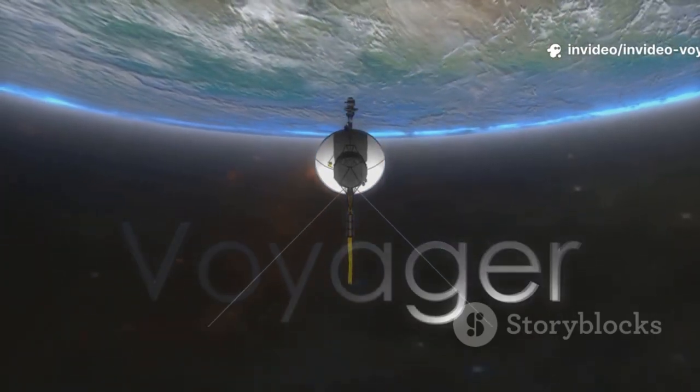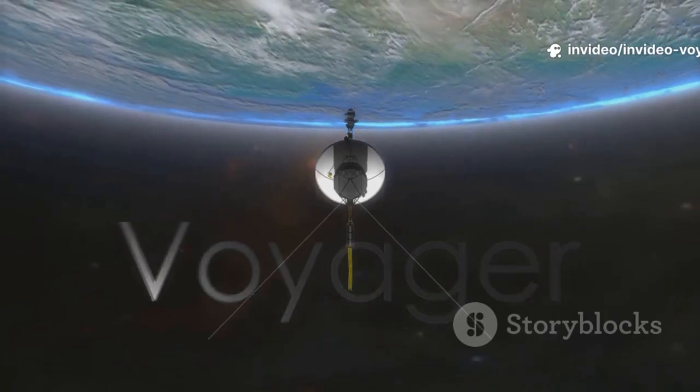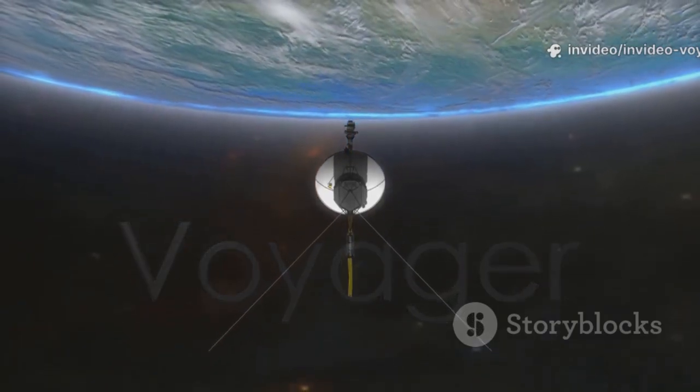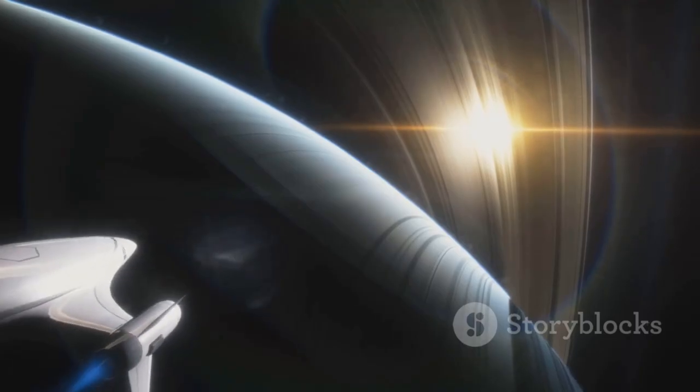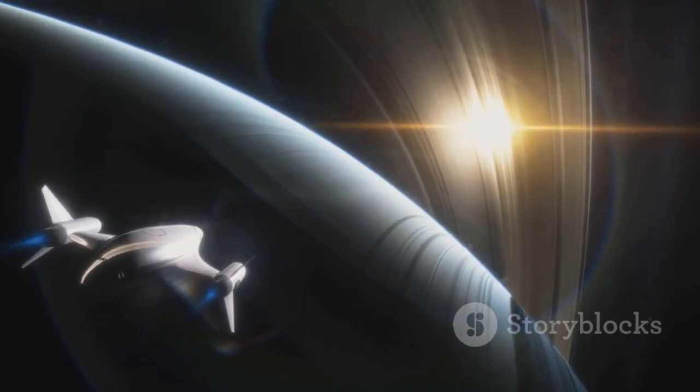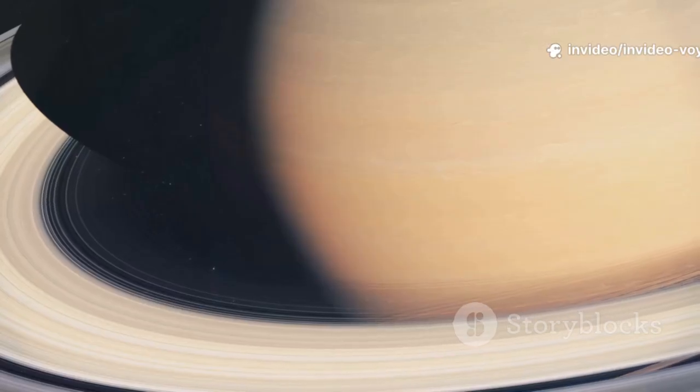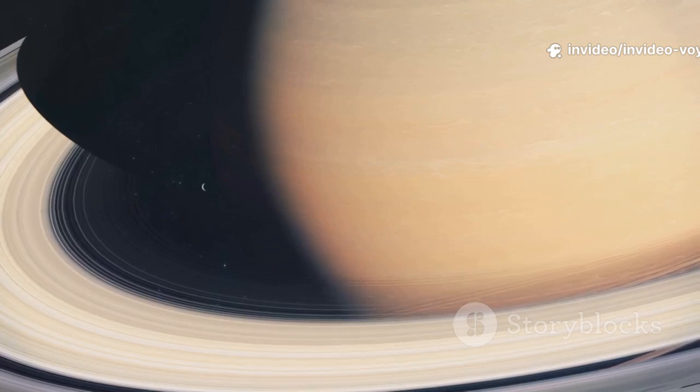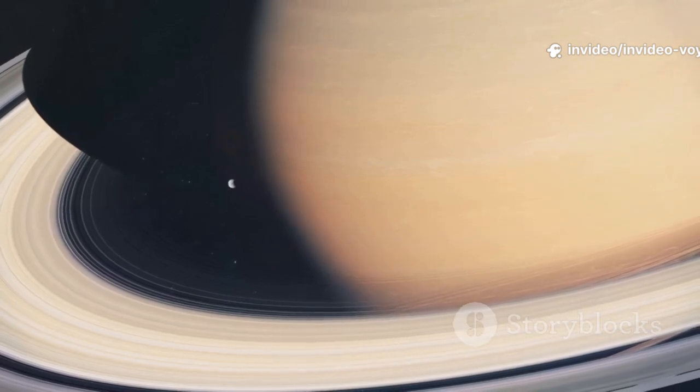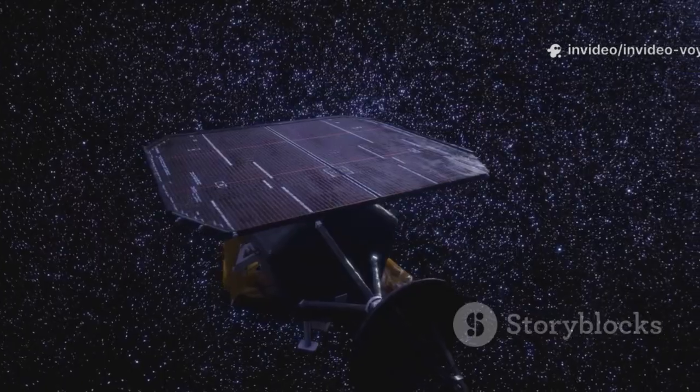After its tour of the gas giants, Voyager 1 just kept going. It flew past the orbits of Uranus and Neptune. It headed for the boundary of our solar system, the place where the sun's influence finally fades. We all watched for decades as this little machine traveled farther and farther away from home, a silent testament to human curiosity.